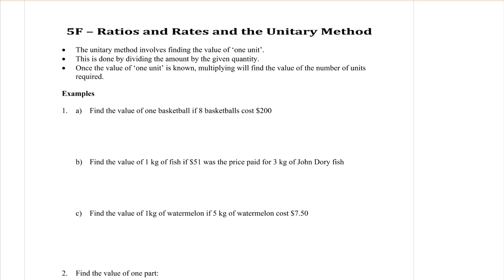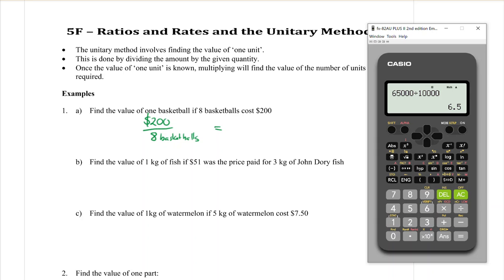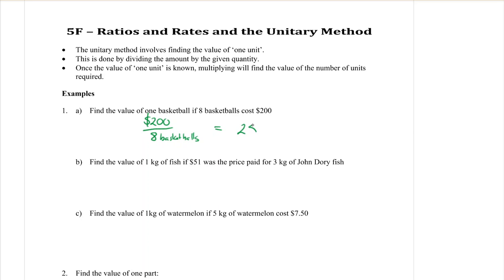The first example says find the value of one basketball if eight basketballs cost $200. This is exactly what we were doing yesterday. If I do that as a rate, I write it as a fraction. It costs $200 for eight basketballs. Then what we do is we divide those numbers. 200 divided by 8 makes 25, and that is dollars per basketball. But that is what we call a unit, isn't it? It's how many dollars for one basketball.